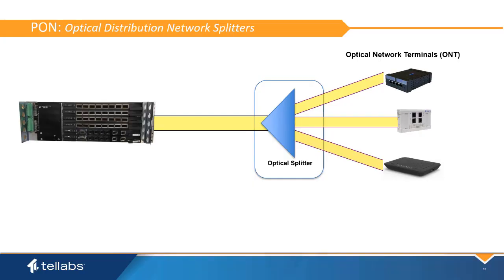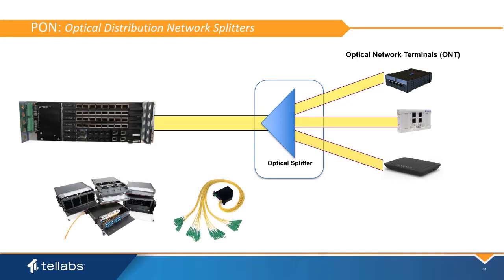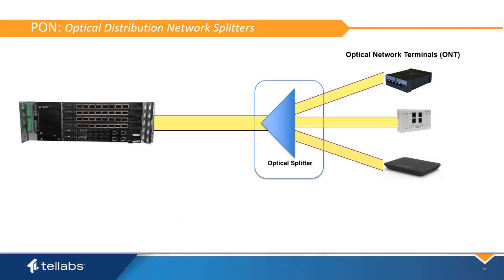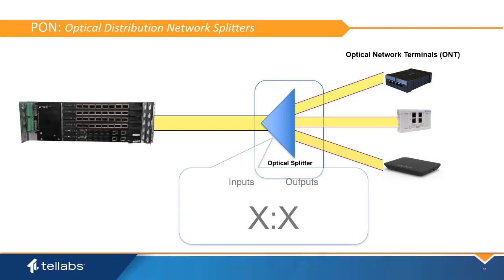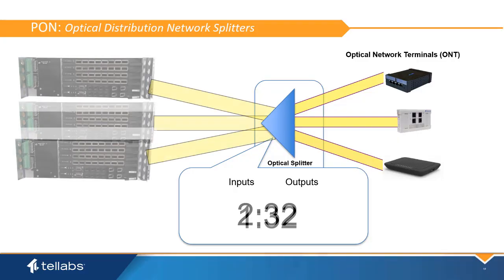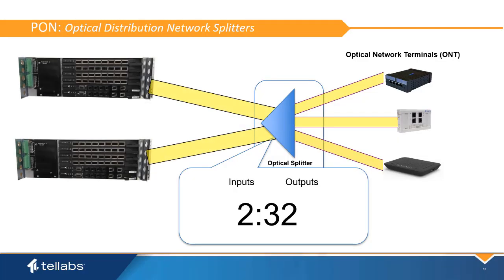Splitters are a passive component of the PON interface and come in a variety of mounting options including wall, ceiling, and racks. Splitter configurations are typically expressed in a ratio of inputs from the OLT to outputs to the ONTs. For example, a 1:32 splitter would accept one input from the OLT and support up to 32 ONTs. Some splitters have two inputs from the OLT to support a PON protection group configuration.